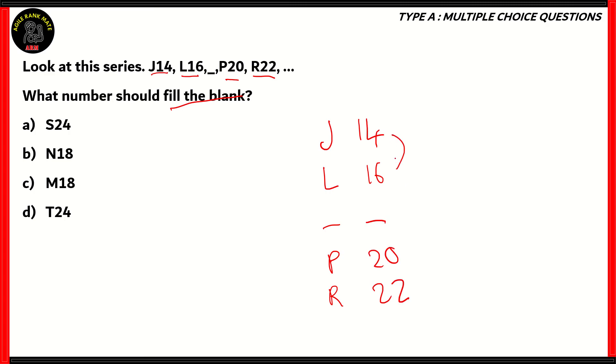So straight away, you can see that between the numbers, there's a difference of 2. So there's a difference of 2 between 22 and 20, and 16 and 14. So therefore, the number here has to be 18 in order to make the numbers in series. So 16 plus 2 is 18, 18 plus 2 is 20. So options A and D are incorrect, because they show 24 as a number, whereas in fact, it has to be 18.